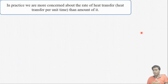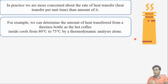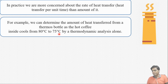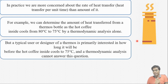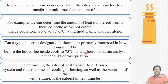In practice, we are generally more concerned about the rate of heat transfer than the amount of heat transfer. Suppose we have one thermos in which there is coffee at a temperature of 80 degrees Celsius. We know that as time goes on, the temperature of the coffee inside will decrease to 75 degrees Celsius. We can determine the amount of heat transfer as the hot coffee cools from 80 to 75 degrees. But as an engineer and designer of the thermos, one is primarily interested in how long it will take to reach 75 degrees — and thermodynamic analysis cannot answer this question. Determining the rate of heat transfer to or from a system, and thus the time of cooling or heating as well as variation of temperature, is the subject of heat transfer.